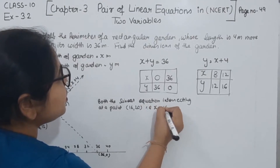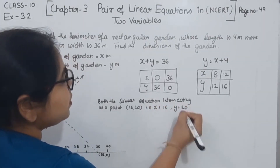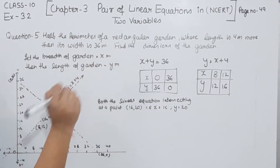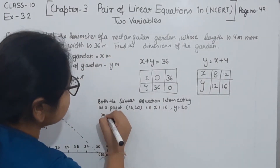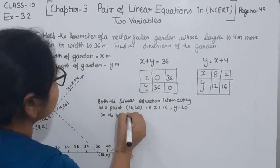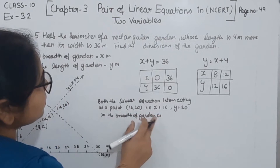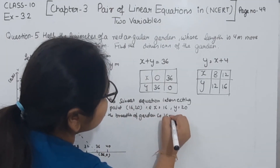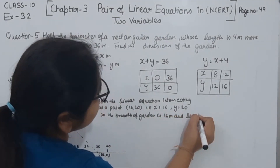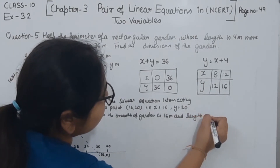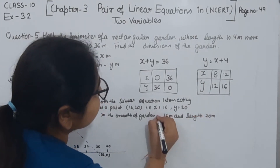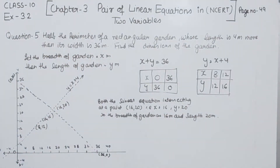So x is equal to 16 and y is equal to 20. We had let the breadth of the garden equal to x, so the breadth of the garden is 16 meter and the length is 20 meter. With this we have completed question number 5. In the next video we are going to start with question number 6.